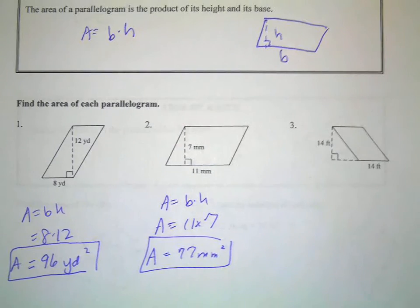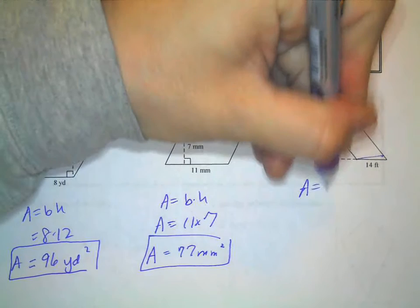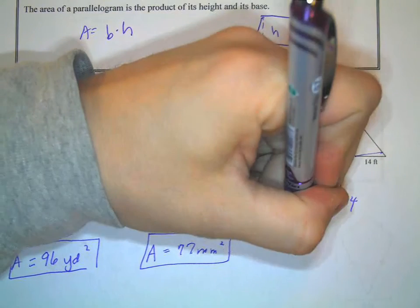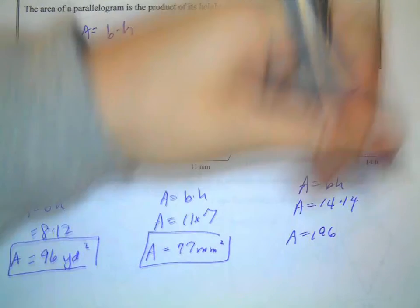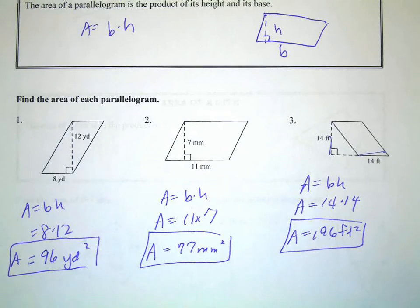And for this one here, the base is 14, the height is 14. So it's going to be 14 times 14, which is 196 square feet. Okay, so that's easy enough.